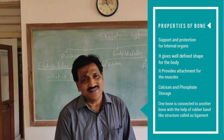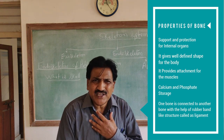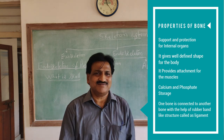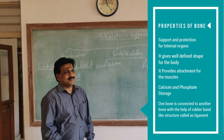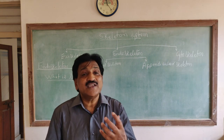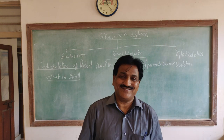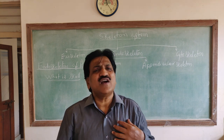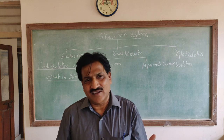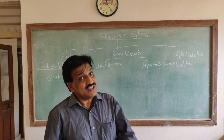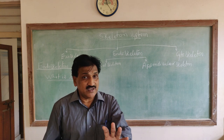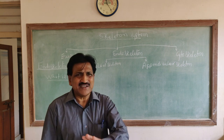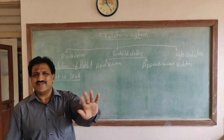One more important function: the endoskeleton gives protection to the internal delicate organs — the vital organs such as the heart, liver, and lungs. These are the functions carried by the endoskeleton, applicable to both rabbit and frog, though certain differences are there.